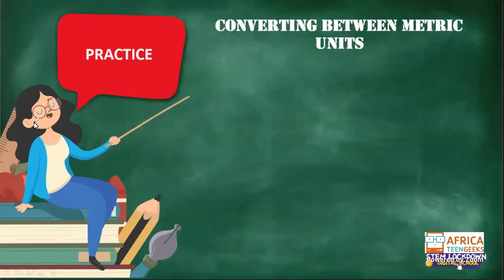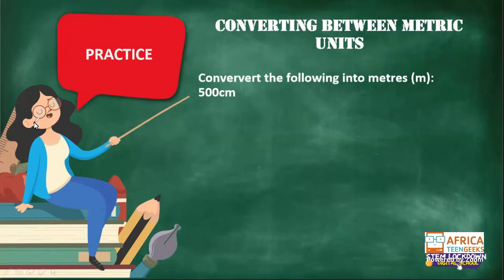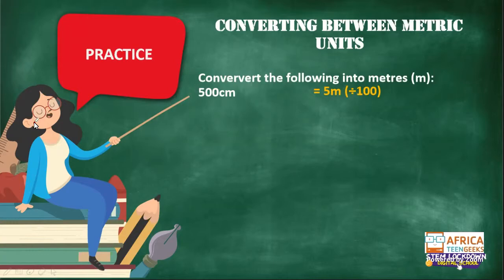Let's practice — I'm going to give you guys some amounts and I want you to convert them. First one: convert 500 centimeters into meters. If we want to convert centimeters to meters, we divide by 100. So 500 centimeters divided by 100 gives us 5 meters. Very nice, Vicky.